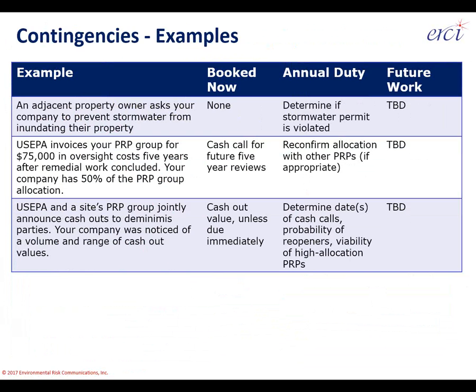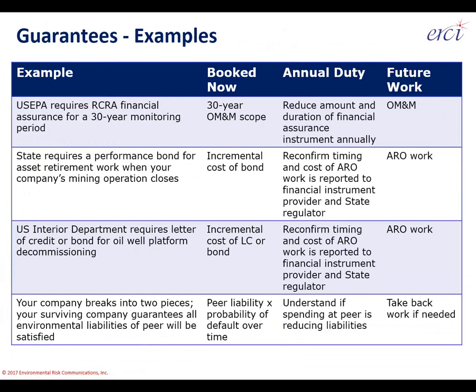The fifth type is guarantees. First example: EPA requires financial assurance for a 30-year monitoring period. What you would book is the 30-year OM&M scope as the liability. What you call a guarantee is the cost of creating the financial assurance instrument — like a letter of credit or performance bond — that shows you have a backup financial party guaranteeing your performance. If the 30-year OM&M activities cost $3 million, that gets booked as a remediation or asset retirement obligation. The guarantee itself may be 0.5%–5% of that $3 million — so booking $30K–$150K for the guarantee.